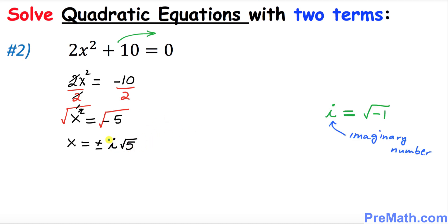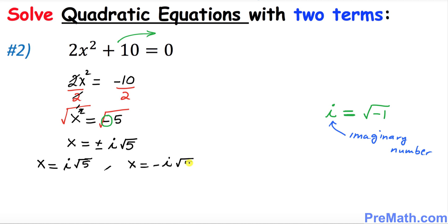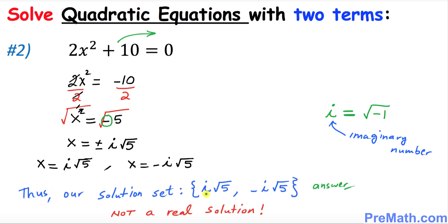This i is called an imaginary number, and always remember that i is equal to the square root of negative 1. Whenever you have a negative sign inside a radical, it always converts into an imaginary number. So our two solutions are x equal to positive i times square root of 5, and x equal to negative i times square root of 5.